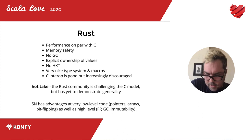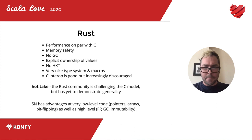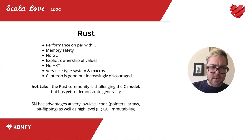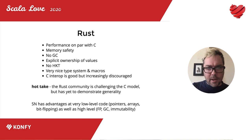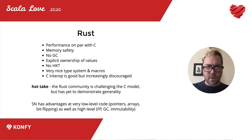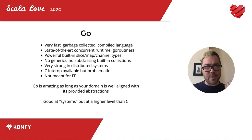With the Rust community moving away from unsafe Rust, I think Scala Native has advantages both at a lower level than Rust provides — working with pointers, arrays, bit flipping — and then at a very high level on top of that, because we do have monads, functional programming, garbage collection, and immutable data structures in Scala Native. When I've worked in Rust, I find those are things I miss. Working with mutable sequences all the time is awkward for me — immutable sequences feel right after 10 years of writing Scala.